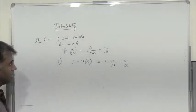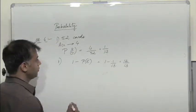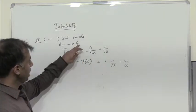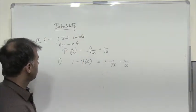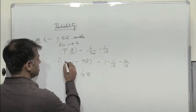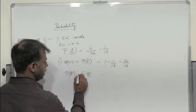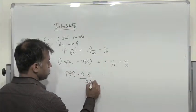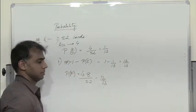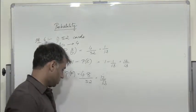Can I calculate it the other way? Yes. Probability of the event which is not favorable — there are four ace cards, so 48 cards are left over. So p of F is 48 by 52, which is again 12 by 13. So this is again a very simple problem.